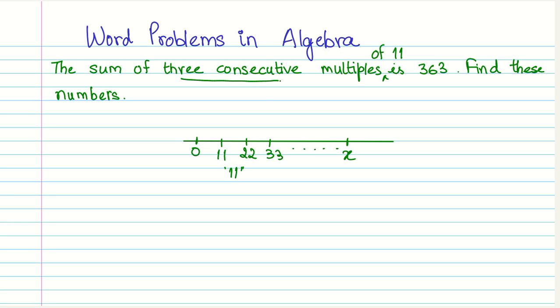So we are told three consecutive multiples, which means X. Therefore, the next multiple will be X plus 11.